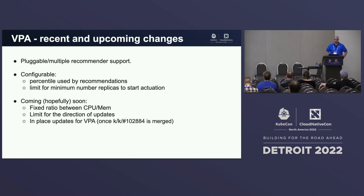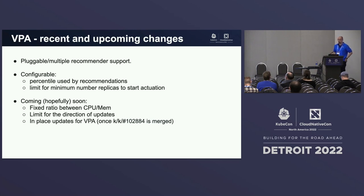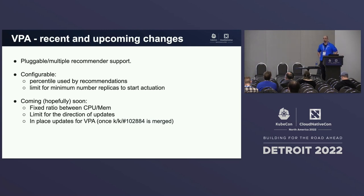To support this feature, you can now provide the percentiles used by the standard VPA recommender. While the default 90th percentile plus a little buffer works for quite a lot of users, you may want to increase it if your workload is more spiky and you care about latency, or decrease it if you want to oversubscribe your nodes more. Soon we hope to have an ability to keep a fixed ratio between CPU and memory, limit the direction of updates so containers only scale up, and we really hope to have Kubernetes in-place pod updates landed so VPA doesn't restart your pods while performing updates.